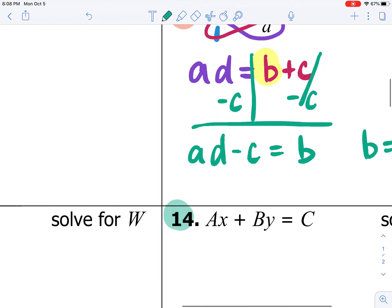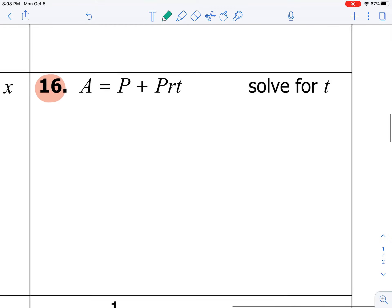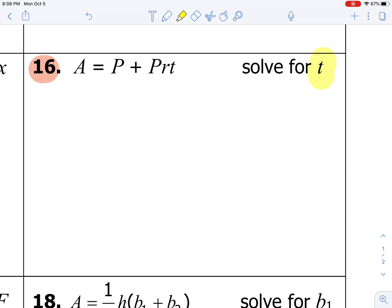The next one that we're going to do together is number 16. This time, we want to solve for t. On this problem, there are no fractions, so I'm not going to worry about that. I'm just going to start immediately solving for t. So the first thing that we need to do in order to solve for t, remember you want to follow the order of operations in reverse.